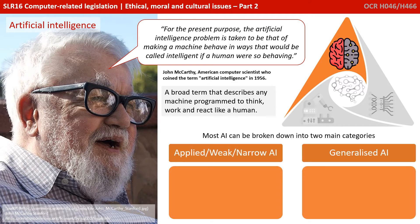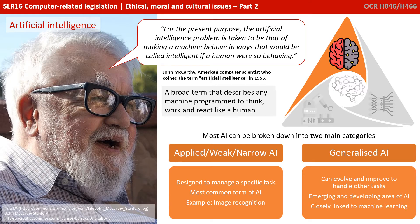In most cases AI can be broken down into two main categories. We have applied, weak, or what's known as narrow AI, and this is AI that's designed to manage a very specific task. This is the most common form of AI — for example, playing a game of chess or image recognition.